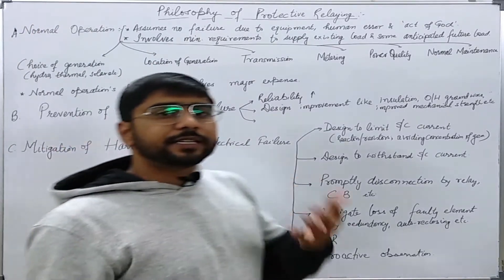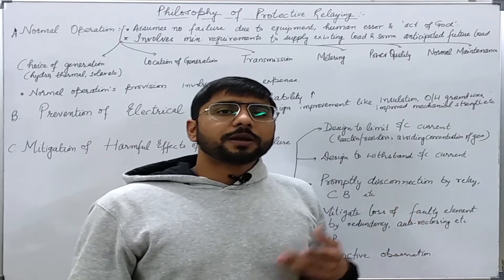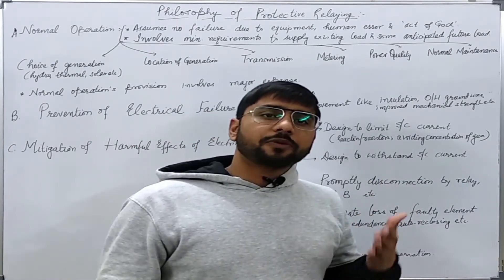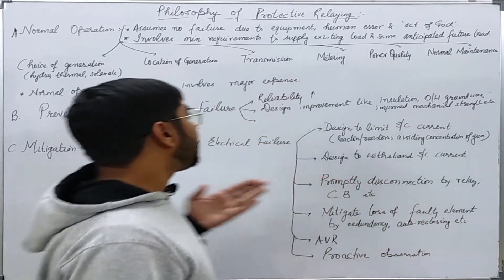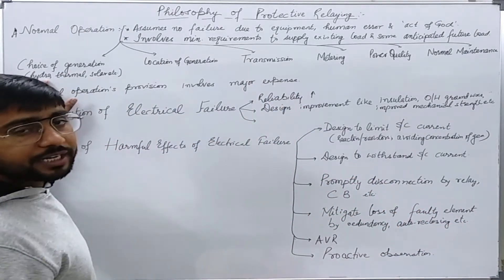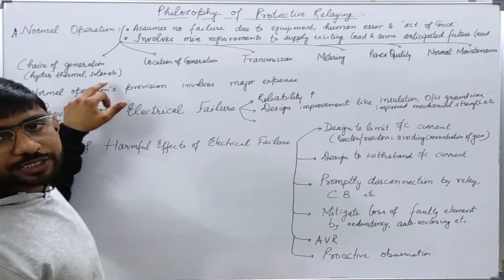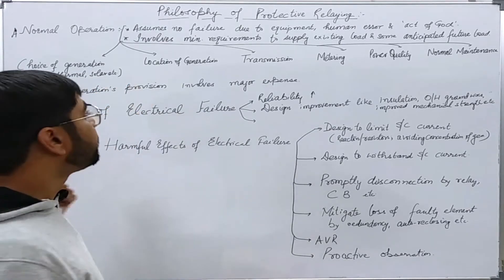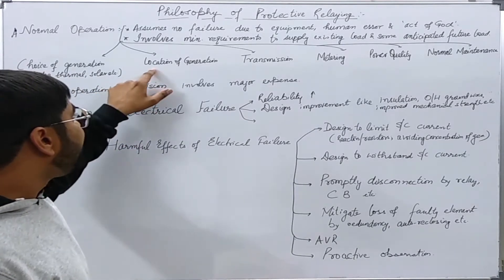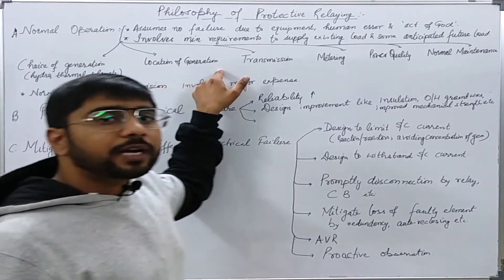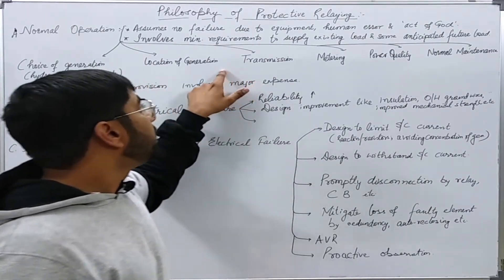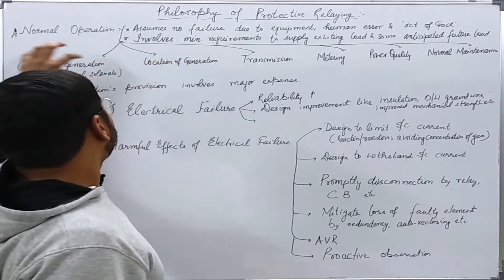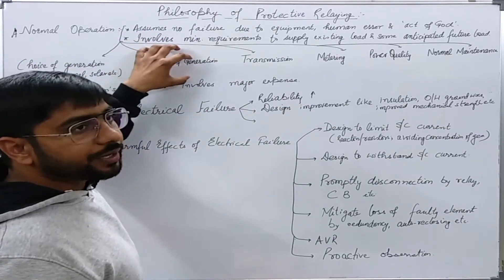For normal operation, we try to find a choice between the type of generation to utilize — whether hydro, thermal, solar, nuclear, or other means. We should also try to understand where to locate those generating plants. Once we have understood the choice of generation as well as their location, we should try to find the choice of transmission of power from generating stations to the load.